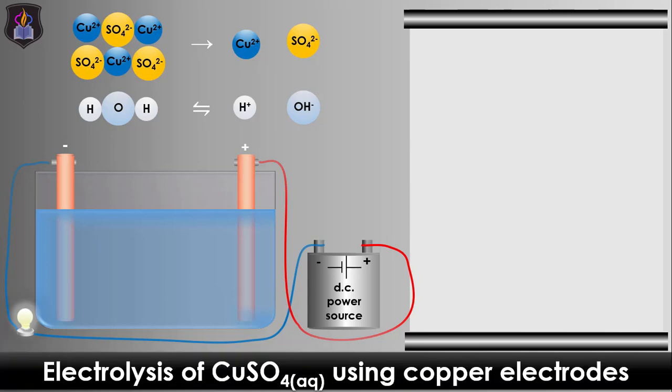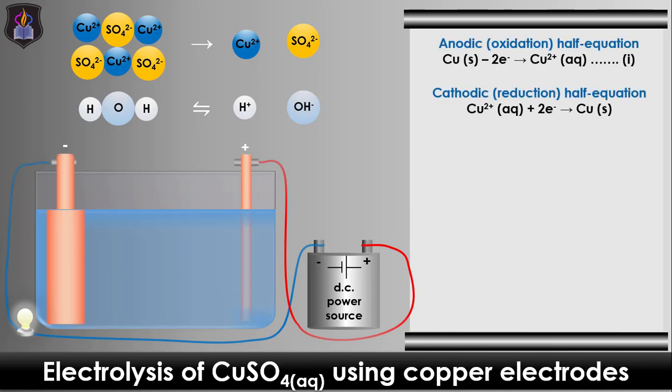In electrolysis of copper(II) sulfate using copper electrodes, there is no discharge of ions except copper(II) ions at the electrodes. This is due to the interference of the copper electrodes in the electrolytic process. So, the copper anode goes into solution and replaces the copper(II) ions deposited at the cathode as metallic copper, as shown in the equations of reactions.